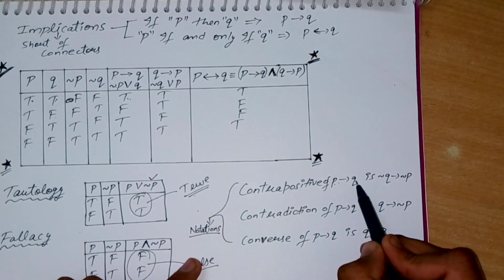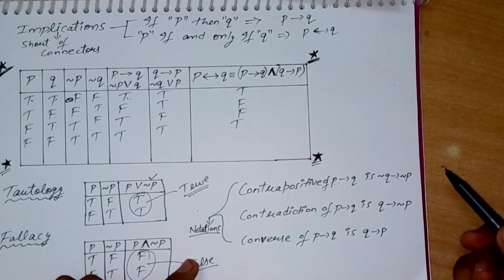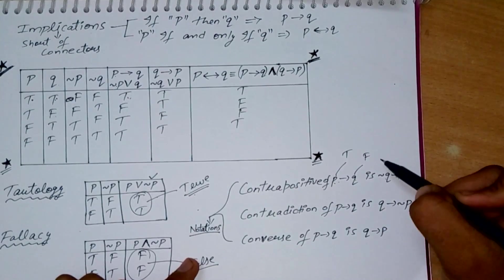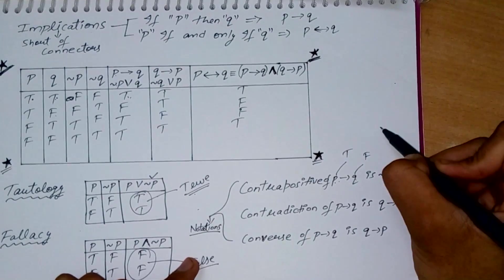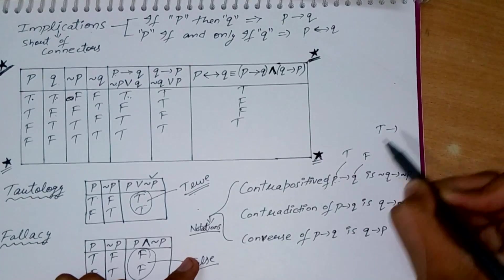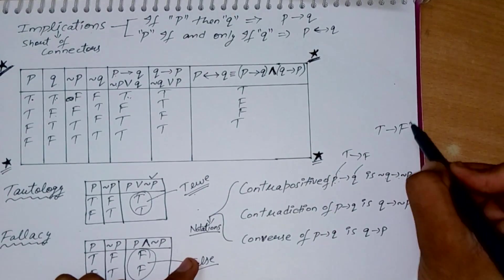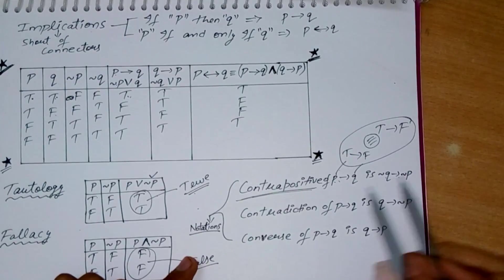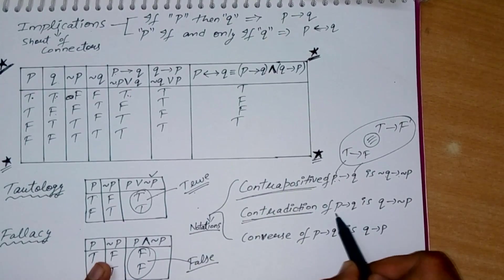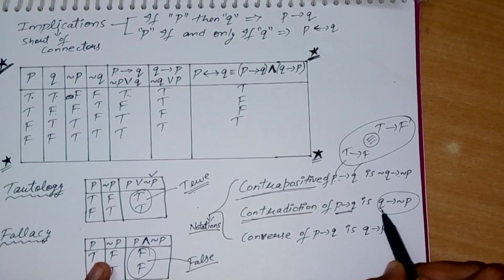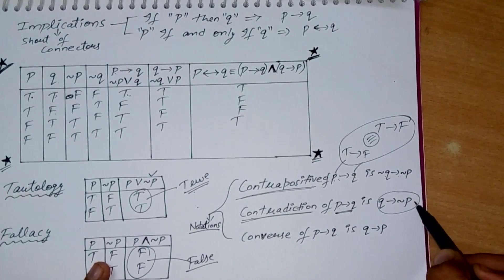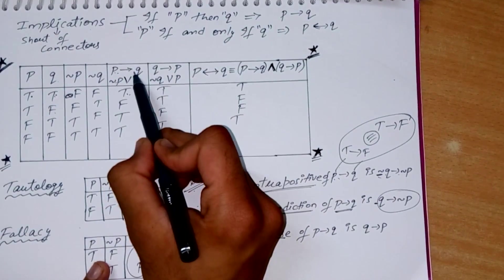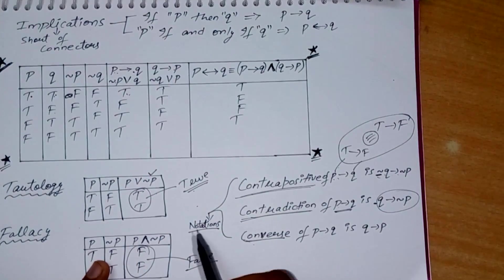Some important notations: contrapositive means P implies Q can also be written as negation of Q implies negation of P — the same meaning. Contradiction contradicts the statement: P implies Q, then its contradiction is Q implies negation of P — the meaning changes. Converse: P implies Q, and its converse is Q implies P.